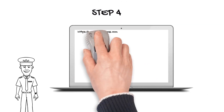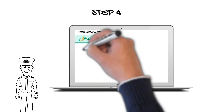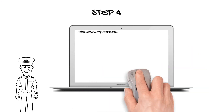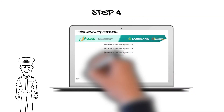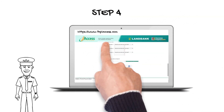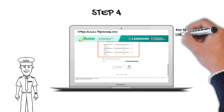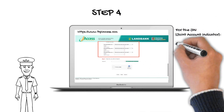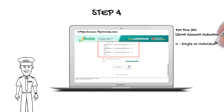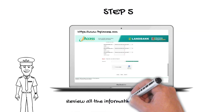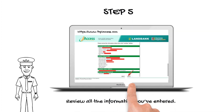Step 4: Fill out the application form properly. Those items marked with an asterisk are required. You can type in NA if these items are not applicable. Do not forget your answers to the security questions. For the JA or the joint account indicator, enter 0 for single individual account, or 1 or 2 for joint account. Step 5: Review all the information you've entered, then click the Confirm button to continue to the next step.